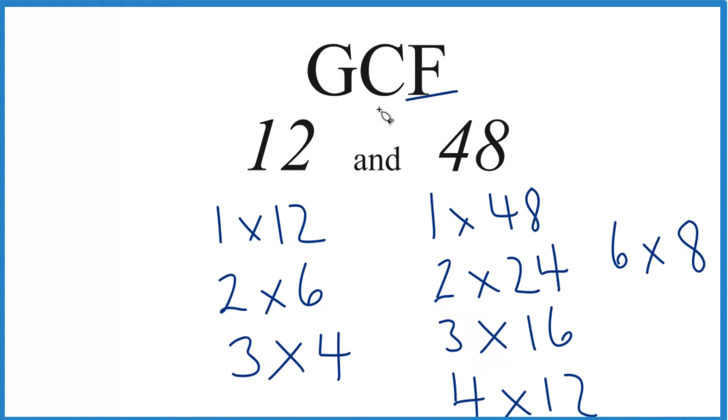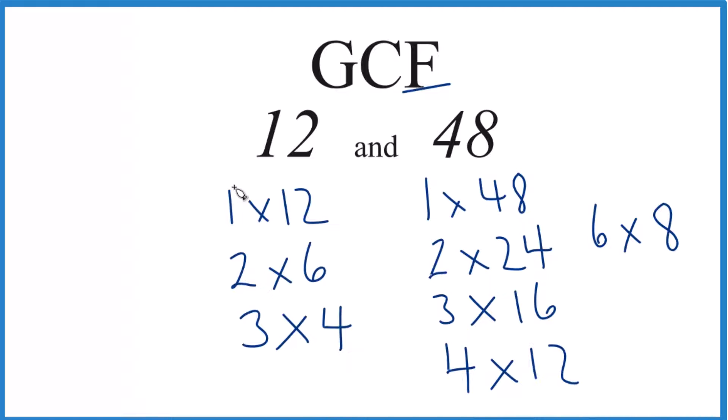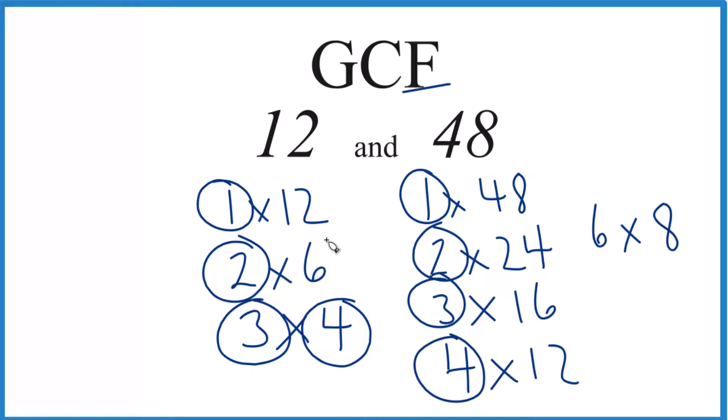So we have our factors. We just need to find out what's common, then choose the greatest one. So 1, that goes into 12 and 48 evenly. That's a common factor, 2, 3, that's in common, 4 is in common. We have 6, that's in common. Lots of common factors here. And then 12, that's the greatest common factor.